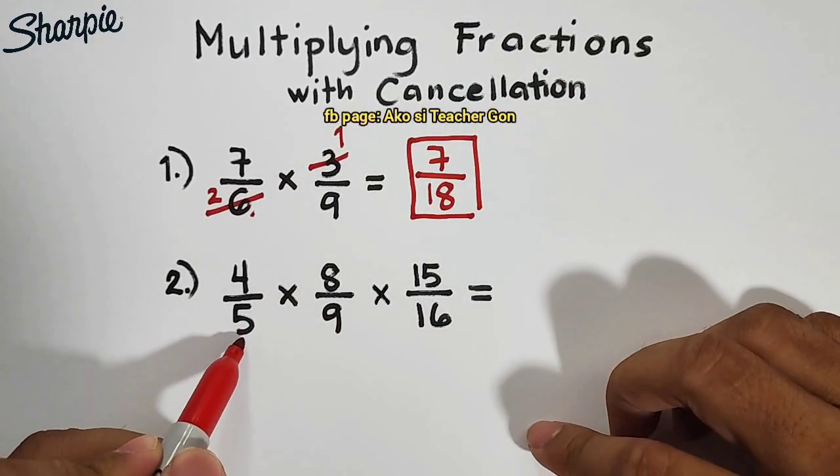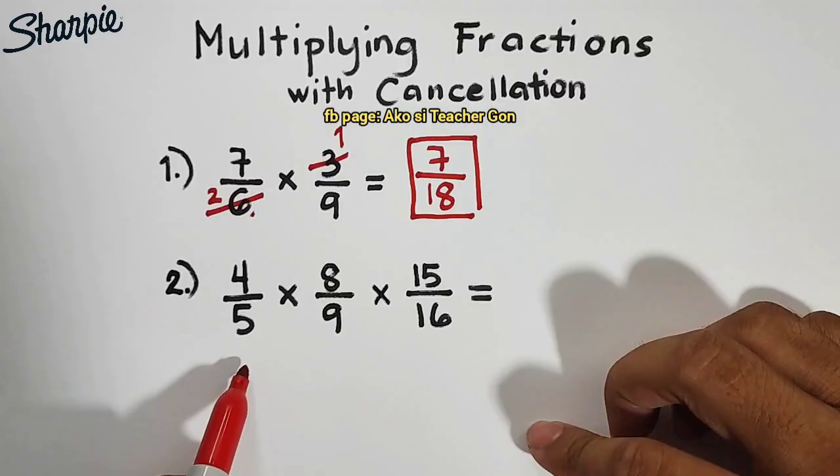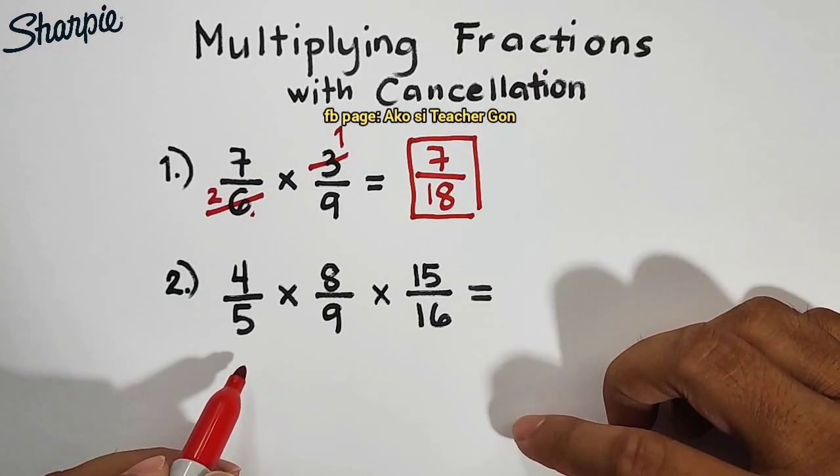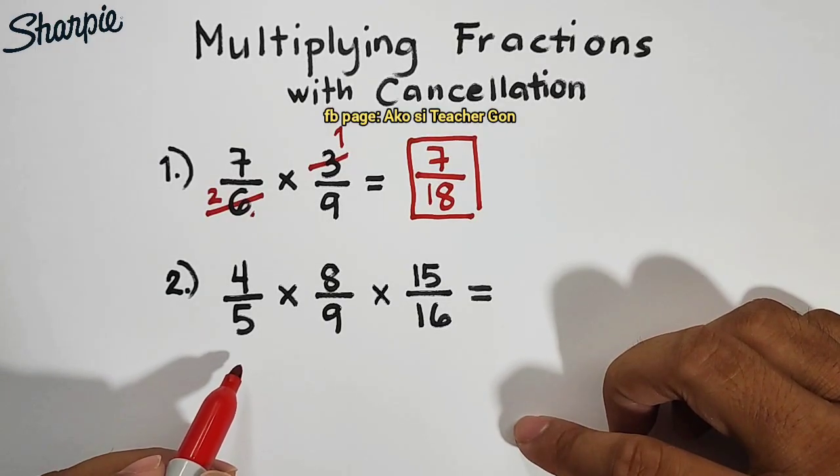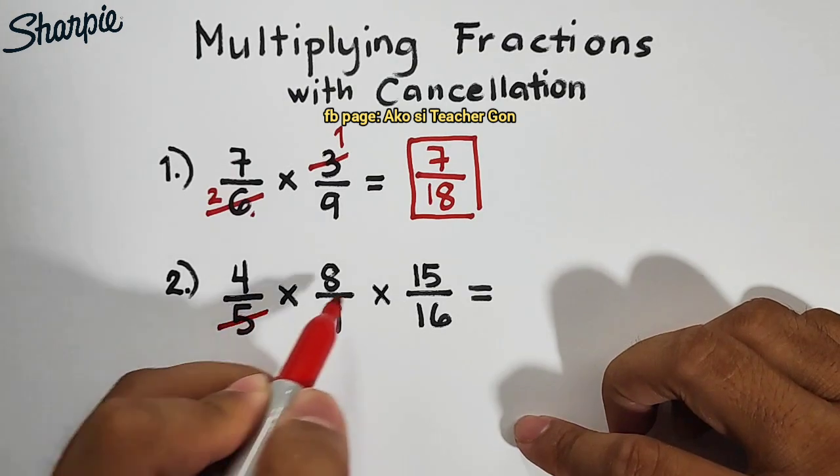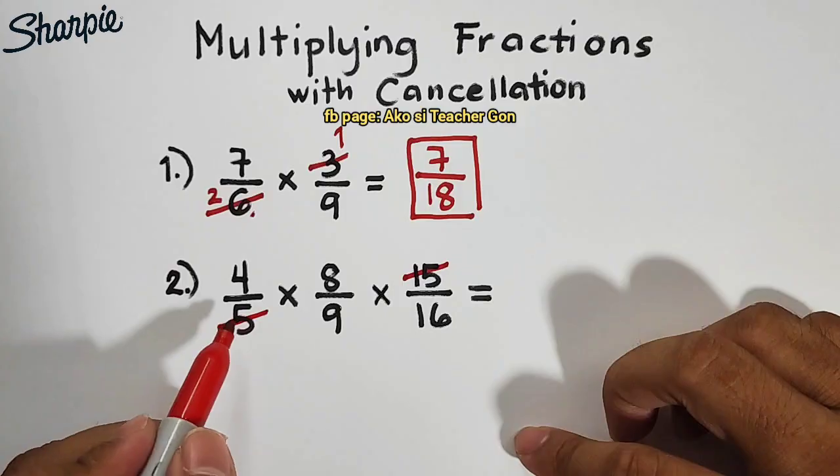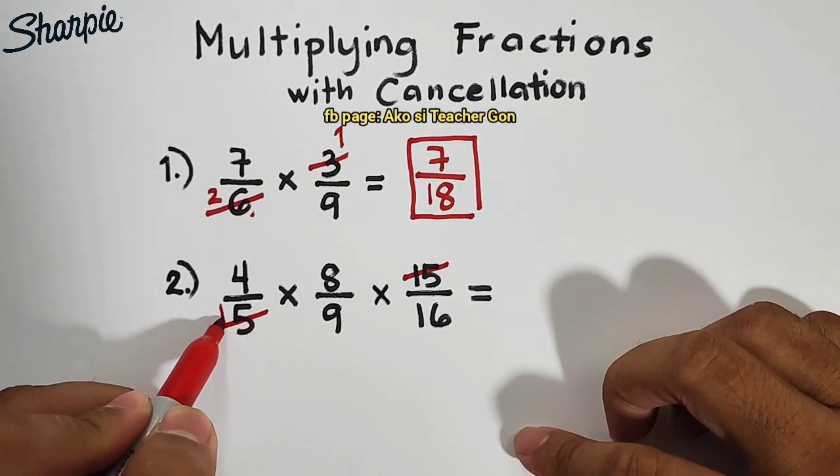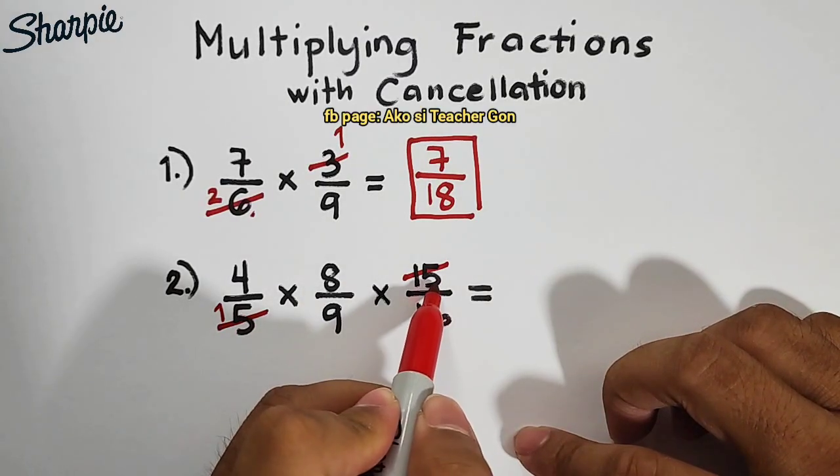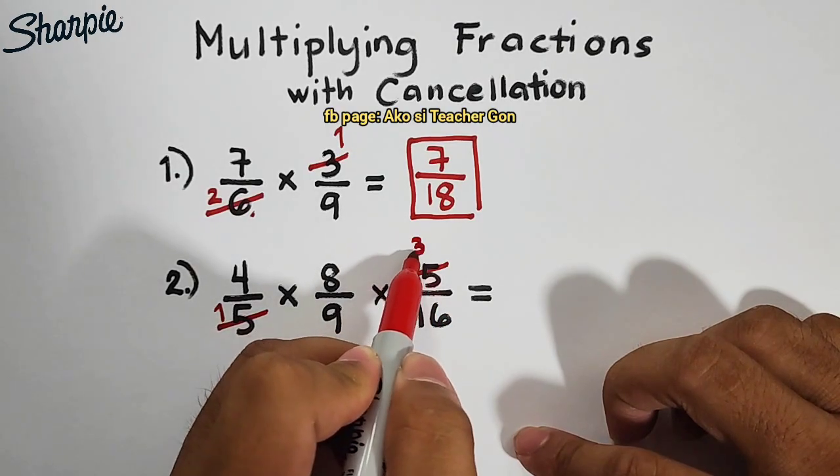First, we have this one, 5 and 15, right? So, what we'll do here is that this 5 of ours, we'll cancel with 15. They have a greatest common factor of 5. 5 divided by 5 is 1. 15 divided by 5, which is equal to 3.